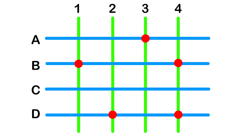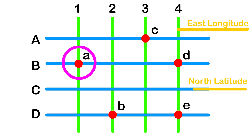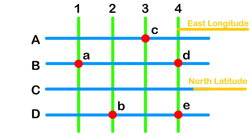To understand this clearly, draw equidistant vertical and horizontal lines on a paper. Label the vertical rows with numbers and horizontal rows with letters. Draw some small circles randomly on points where these horizontal and vertical lines intersect with each other. Name these small circles as A, B, C, D and E. Let vertical lines represent east longitudes and horizontal lines represent north latitudes. You will see that circle A is located on B degrees north latitude and one degree east longitude. Find out the location of the other circles.